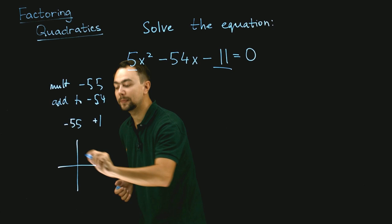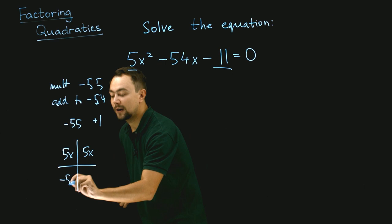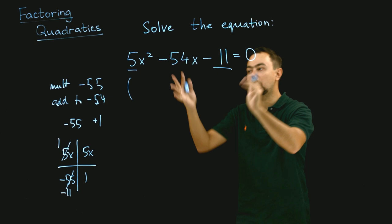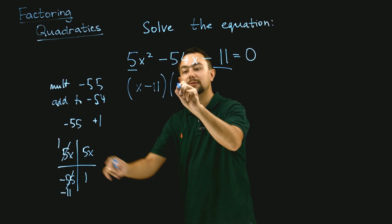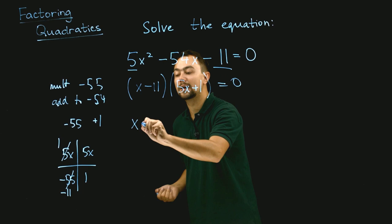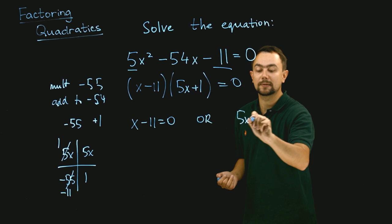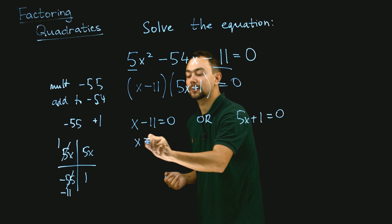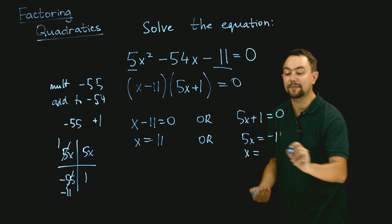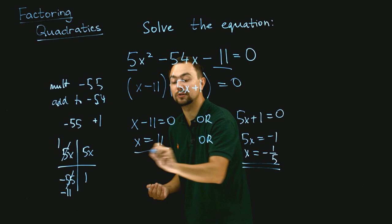We make a table with 5x on top and negative 55 and 1 below. This cancels to give x and minus 11. So the left-hand side factorizes to x minus 11 times 5x plus 1 equals 0. One bracket must equal 0: x minus 11 equals 0 gives x equals 11; 5x plus 1 equals 0 gives x equals negative one fifth. These are the two solutions.